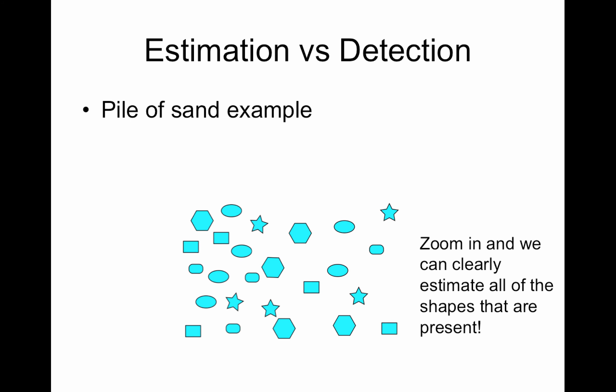But in this case if you zoomed in you can actually see the exact shape of each grain of sand because it's not being covered up by other grains of sand. So you can estimate the shape of the individual grains of sand. Okay so that's my analogy for estimation versus detection.